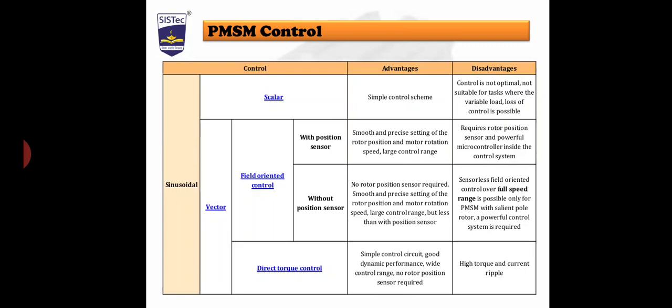Field oriented control without position sensor requires no rotor position sensing. The advantages are smooth and precise setting of rotor position and motor rotating speed, with a large control range, though somewhat less than with a position sensor.